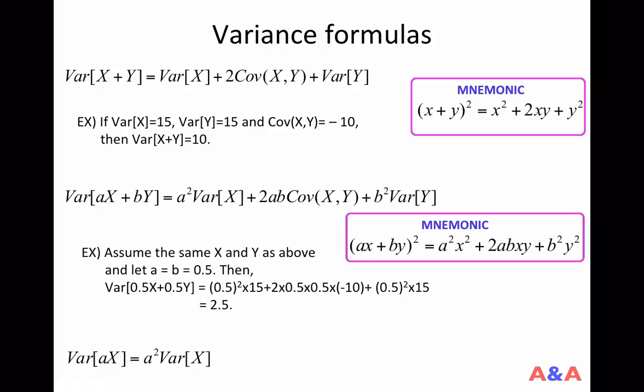If the British pound appreciates, that's good for import but bad for export. If the British pound depreciates, then that's good for export, so the export business does very well but the import business performs very poorly. In other words, sometimes the two businesses you own partially offset each other's performance, and sometimes they have the same fate. In the latter example of owning the import and export businesses, it is very likely that the covariance term is negative.